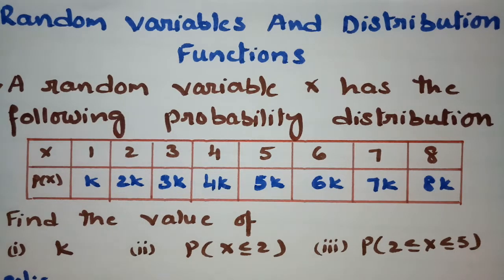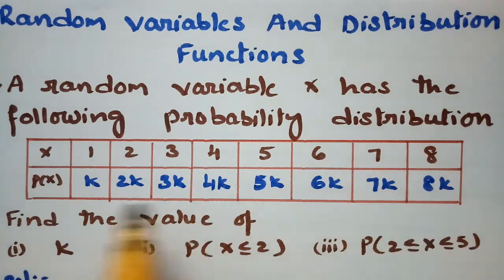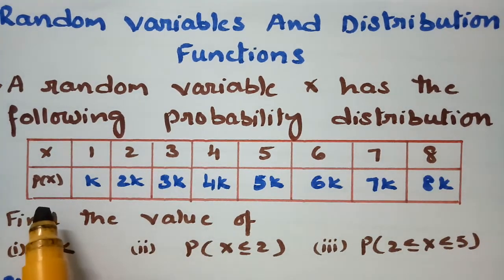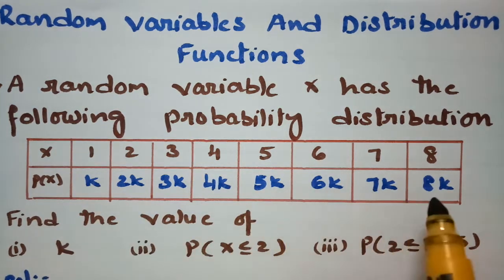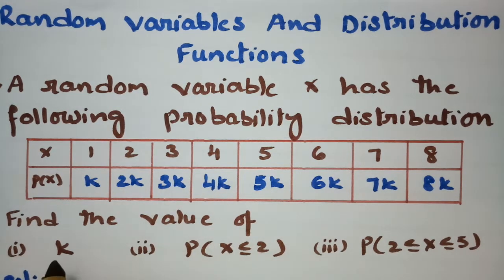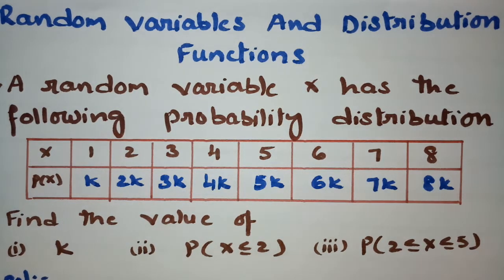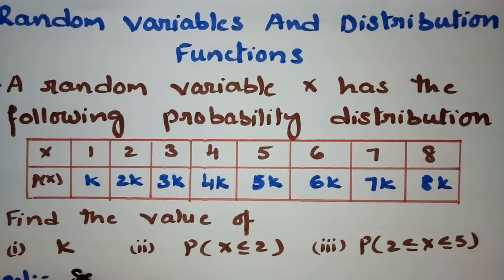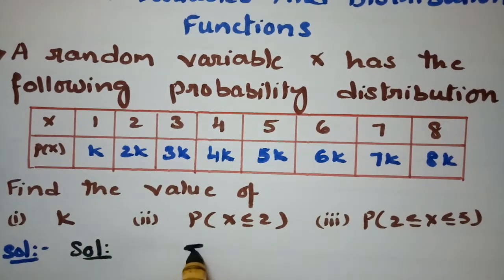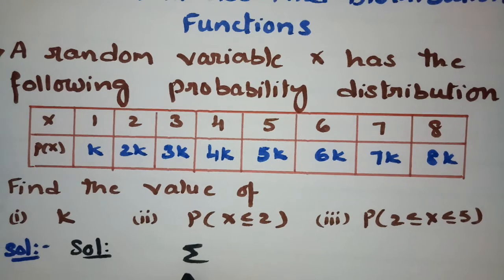This video is on random variables and distribution functions. A random variable X has the following probability distribution: the X values have corresponding P(X) values of k, 2k, 3k, 4k, 5k, 6k, 7k, and 8k. We have to find the value of k, and also the probability of X less than or equal to 2, and the probability of 2 less than or equal to X less than or equal to 5.